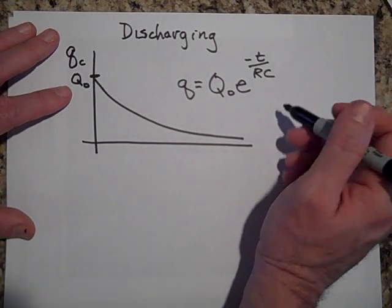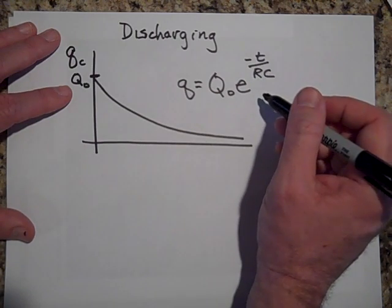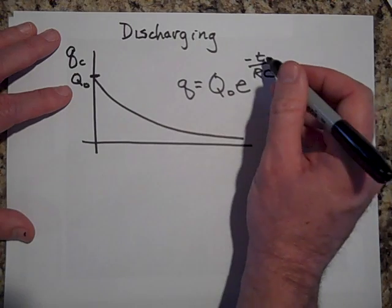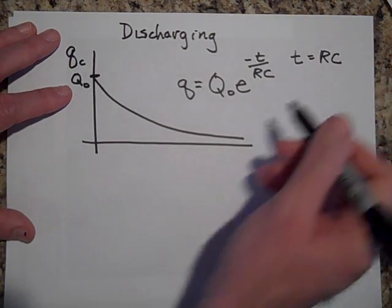So if I put in the time of RC, now you might think, is resistance times capacitance? Does that give you a time? It does. It gives you a time. And when you put in for T, if T equals RC, look at what happens mathematically.